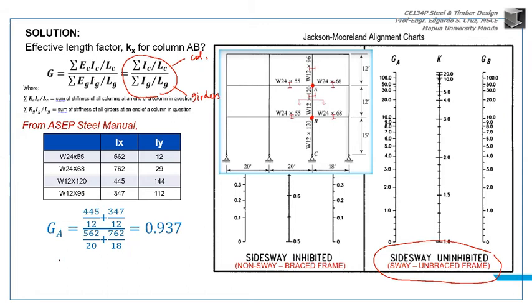So those are the W sections used as girders and columns. How is this obtained? Let's go through GA one by one. Look at joint A. The numerator is columns. What columns are connected to joint A?